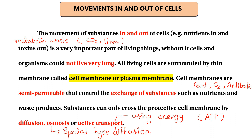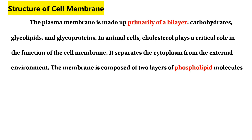The plasma membrane is made out of protein and phospholipids, primarily a bilayer with carbohydrate, glycolipid, and glycoprotein components — especially protein and phospholipid. Plasma membrane is selectively permeable. In animal cells, cholesterol plays critical roles in the function of the cell membrane.